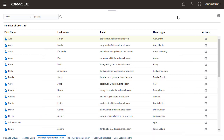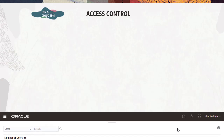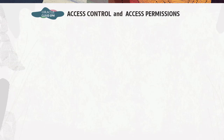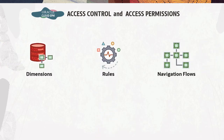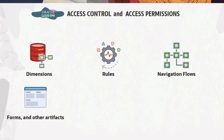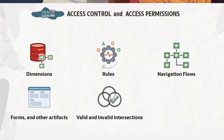Additional security functionality may be available within each Cloud EPM Business Process. These work in conjunction with Access Control to provide access permissions. You can define access permissions to dimensions, rules, and navigation flows, forms, and other artifacts, as well as set valid and invalid intersections and cell-level security.